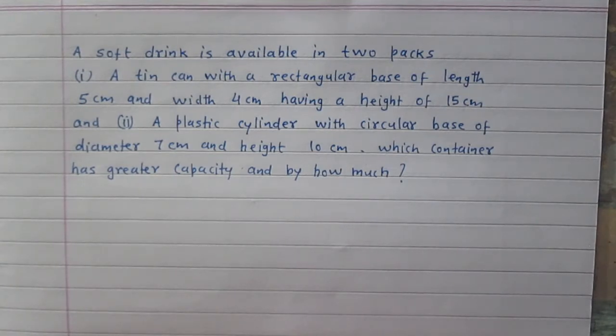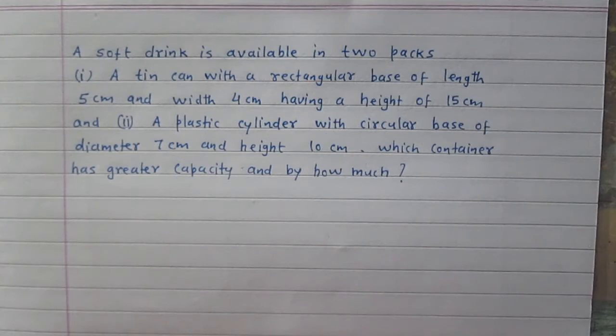Second, a plastic cylinder with circular base of diameter 7 cm and height 10 cm. Which container has greater capacity and by how much?